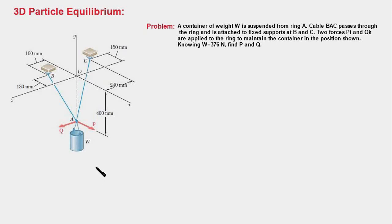In this video, I am going to show you how to solve particle equilibrium problems involving three-dimensional forces. As you can see in this diagram, there is a weight W which is suspended from a ring A. Cable BAC passes through the ring and the ends of the cable are fixed to the supports at B and C. The ring is also acted upon by two forces P along the x-axis and Q along the z-axis.